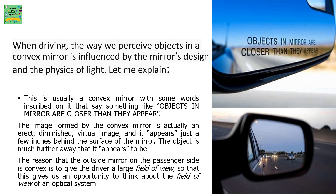The image appears just a few inches behind the surface of the mirror, while the object is much further away than it appears to be. The reason the outside mirror on the passenger side is convex is to give the driver a large field of view, which gives us an opportunity to think about the field of view of an optical system.